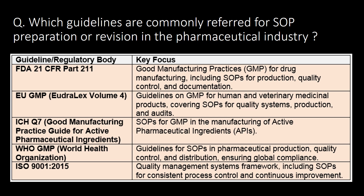Last and very important question: which guidelines are commonly referred to for SOP preparation or revision in the pharmaceutical industry? Here is the list of the top five: 1) FDA 21 CFR Part 211, 2) EU GMP Volume 4, 3) ICH Q7 Good Manufacturing Practice Guide for Active Pharmaceutical Ingredients, 4) WHO GMP, and 5) ISO 9001:2015.